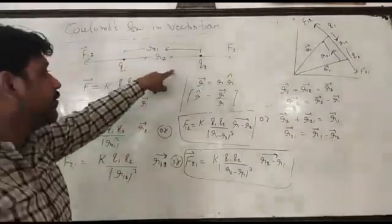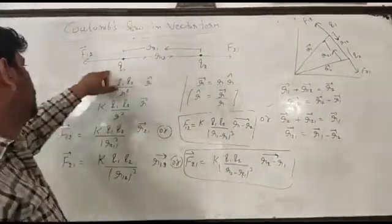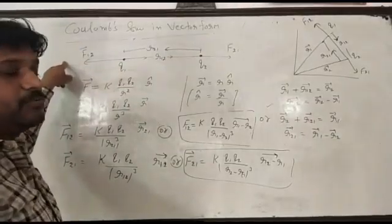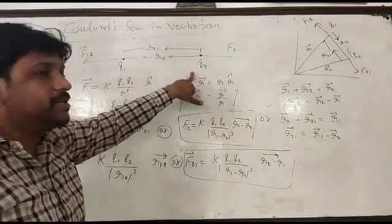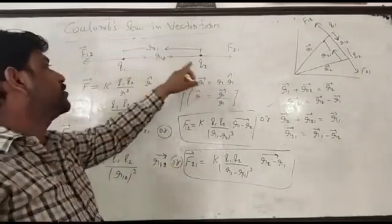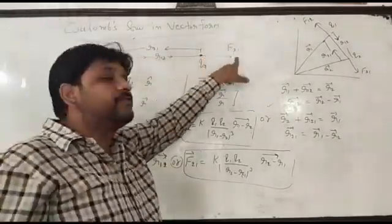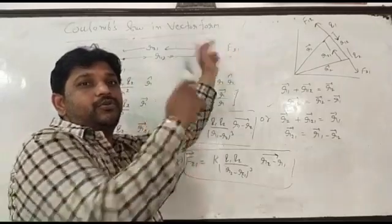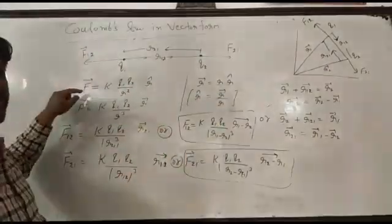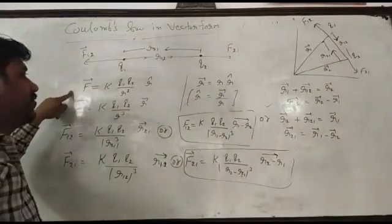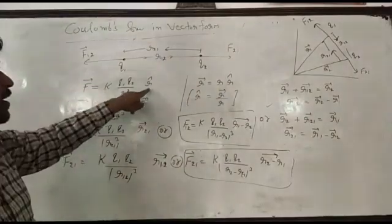q1 is repelled by the second charge q2, force on 1 due to 2. Same as second charge q2 repelled by the first charge q1, F21, force on 2 due to 1. Now coordinate form, as we know, in terms of force vector form having magnitude as well as direction.